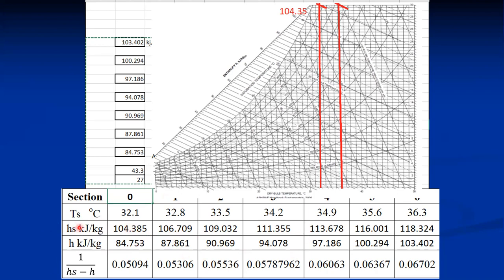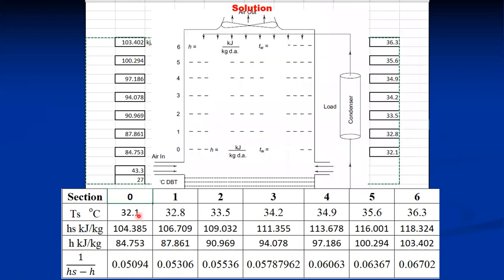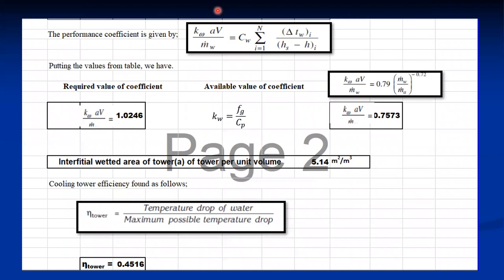With the Hs and H values at each section, we calculate 1/(Hs − H) for each section — using the average of values at the boundaries for each section. There are six values of 1/(Hs − H), one per section. As per the definition of the demand value of performance coefficient: Kw × A × V / M_dot_W = Cw × Σ[ΔTw / (Hs − H)] for each section. With ΔTw = 0.7 for each section and the six computed values of 1/(Hs − H), we calculate the required performance coefficient (demand value).